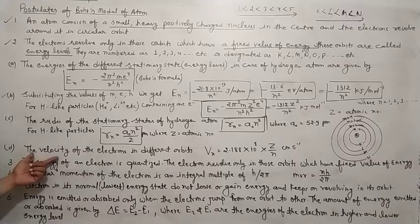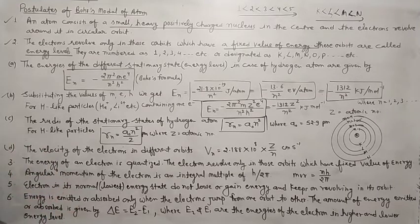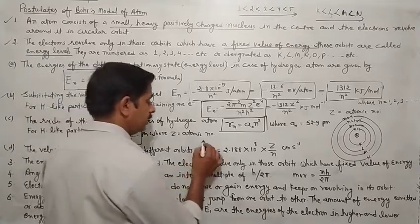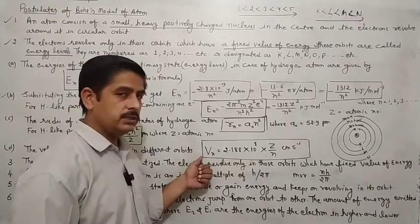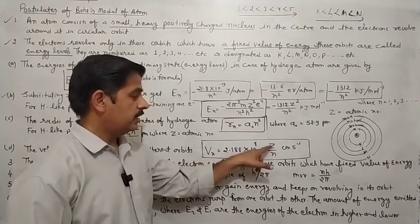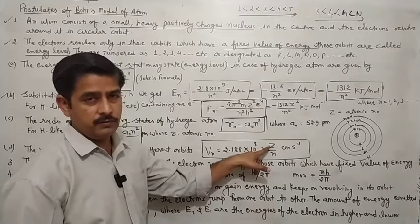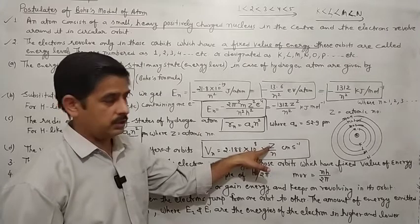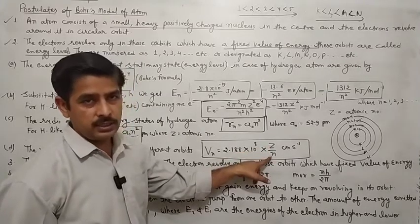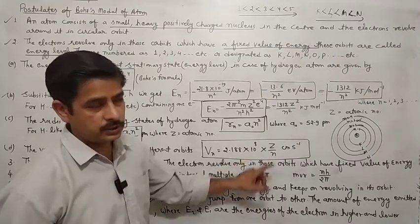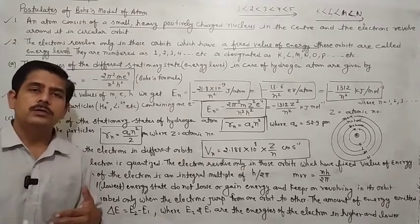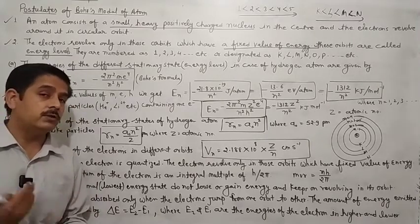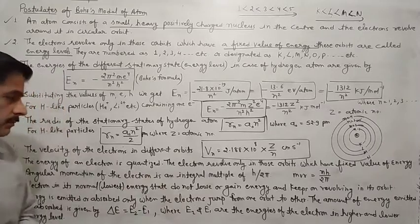Phir hum baat karte hain velocity of electron ki alag-alag orbit ke andar aur alag-alag atom ke andar. Uske liye jo hamare paas formula hai: velocity centimeter per second inverse mein aa jaayegi electron ki. Z yahan par atomic number ho sakta hai — jaise hydrogen ke liye 1, helium ke liye 2, lithium ke liye 3 — aur n shell hai. Hamen pata hai ki n ki value 1, 2, 3, 4, 5 kuch bhi ho sakti hai. Toh isse hamen pata chal jaaye ki kisi bhi shell mein jo electron revolve kar raha hai, uski velocity kya hogi.